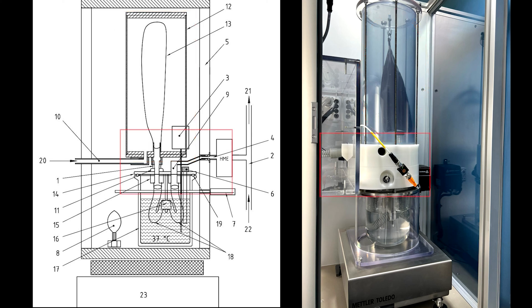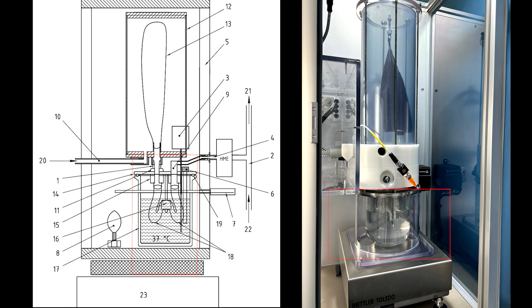Beneath that is the valve housing where a series of directional valves control the flow of air through the humidity generator. Lastly we have the heated water bath which controls the water temperature per the guidelines in the standard.